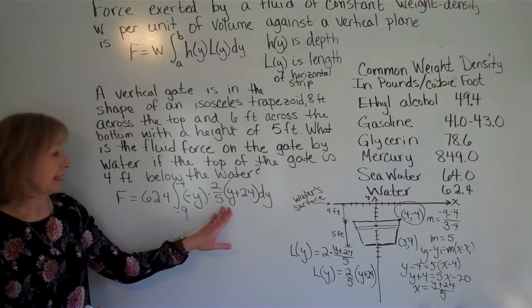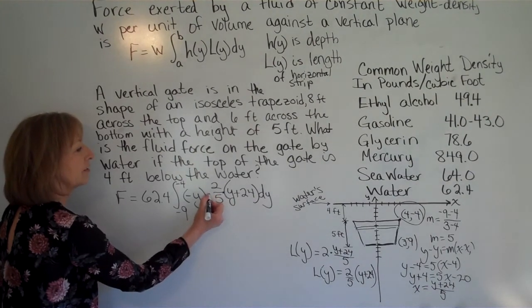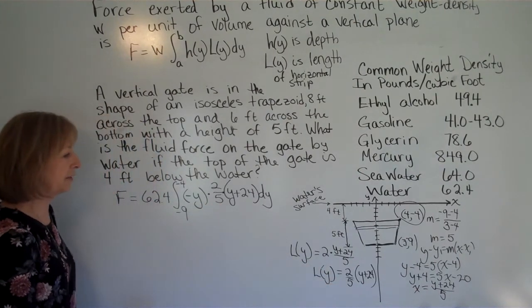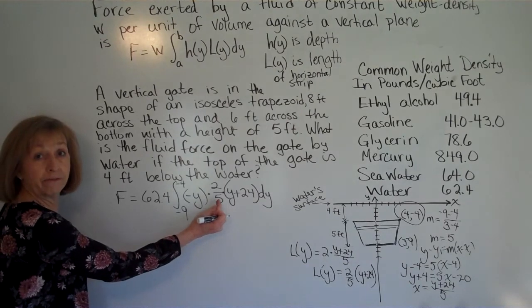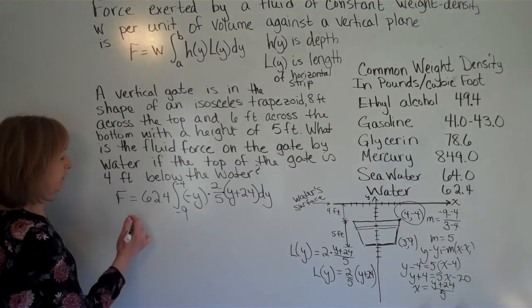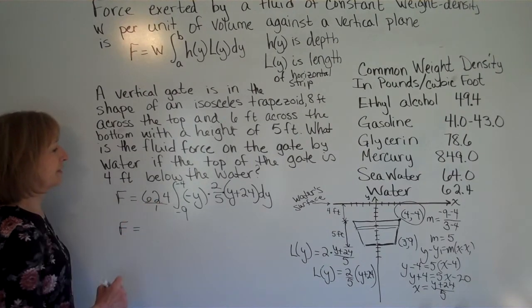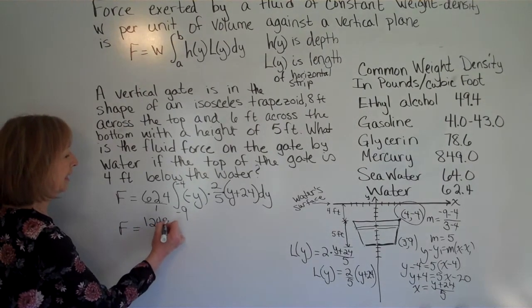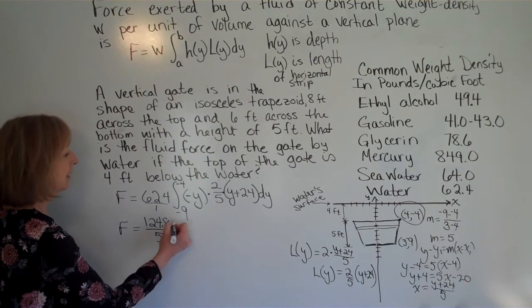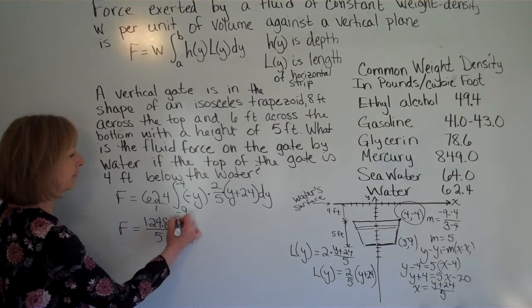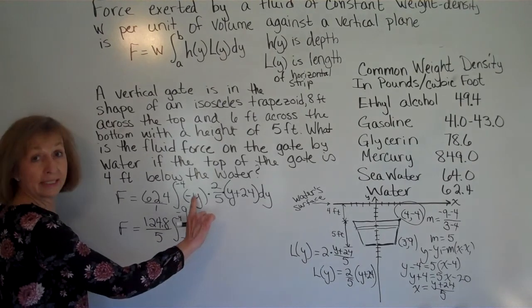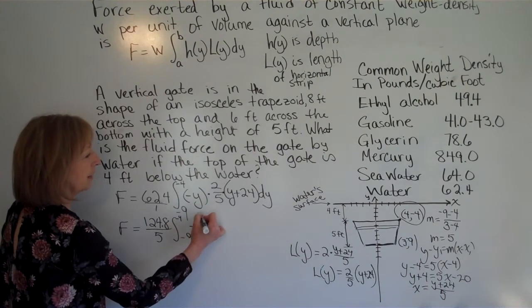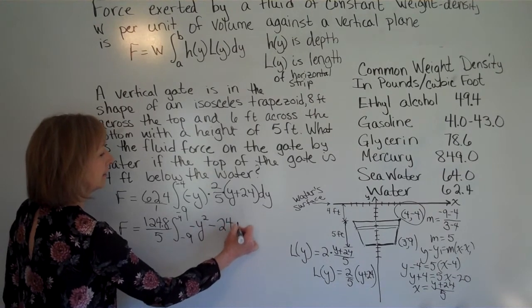Alright, so to work with integrating this, we have that constant factor of two fifths, and this is why we actually wrote our expression in the manner that we did. So we're going to factor out the constant factor of two fifths. So two fifths times the 62.4 gives me 124.8 over five, times my integral from negative nine to negative four. And then we're going to distribute the negative y through this y plus 24 to get ready to integrate. So that's negative y squared minus 24y dy.